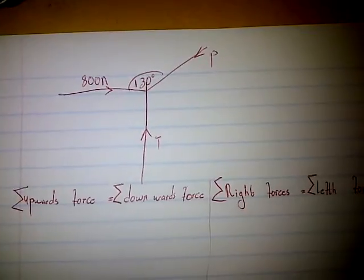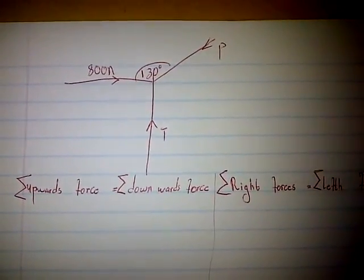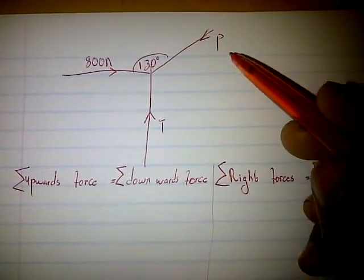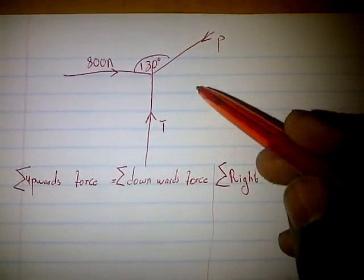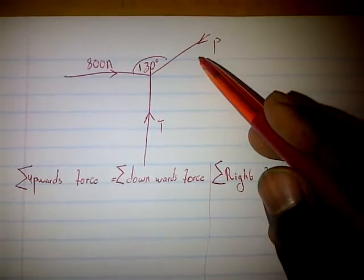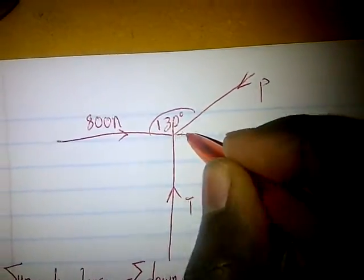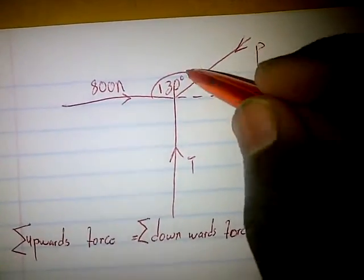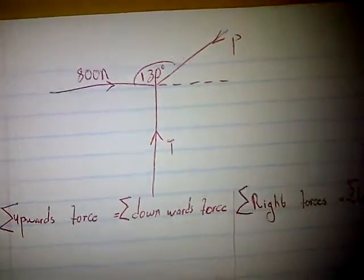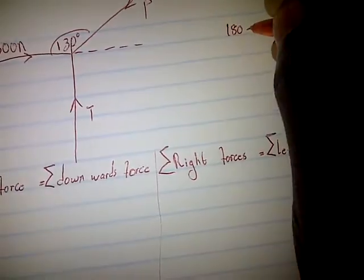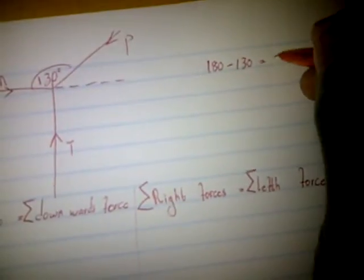Let's look at forces at equilibrium. To determine the forces P and T, the first thing I must do is resolve P into a horizontal component and a vertical component. We're going to subtract theta from 180 — so it's 180 minus theta — to find the angle of P.